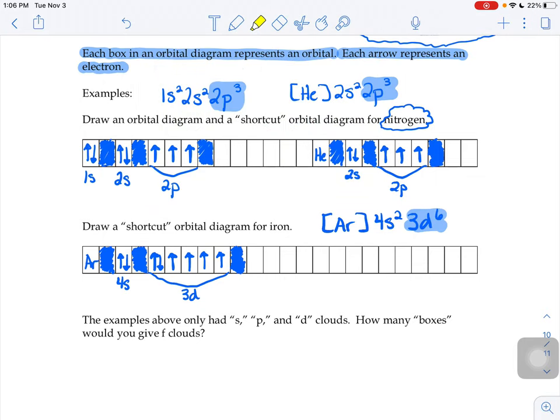So in our examples that we saw here, it said we only had examples of S, P, and D clouds. Our S clouds only got one box because there's only one way to draw S's. Our P clouds here got three boxes because there's three different orientations of P clouds.